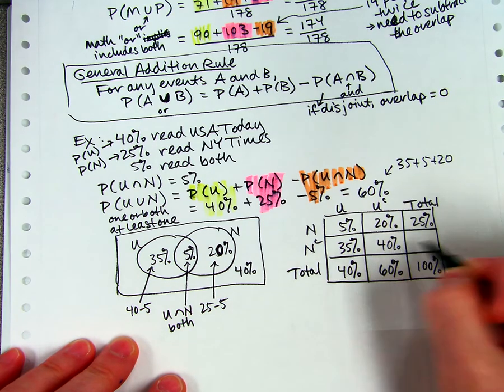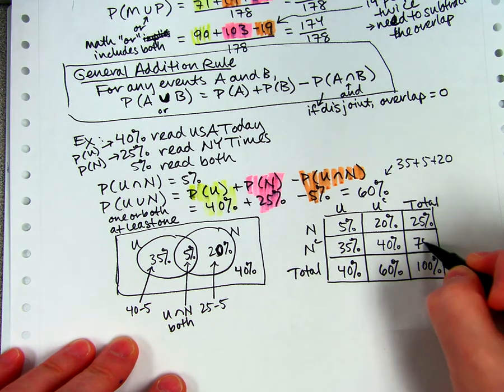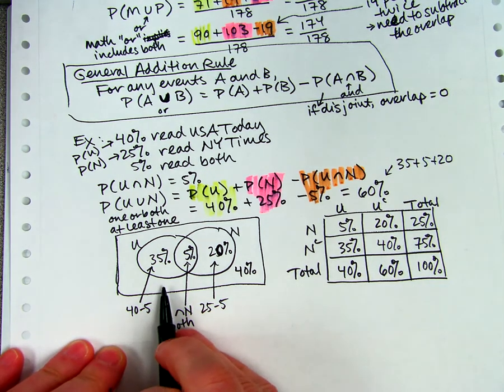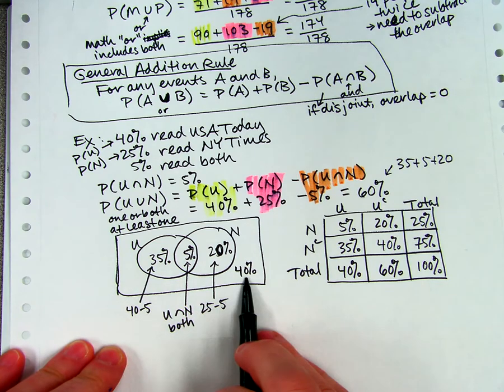By the way, here's the 40. And I could also subtract these and get 75%, which are the people who don't read the New York Times, which is the 35 and the 40 put together.